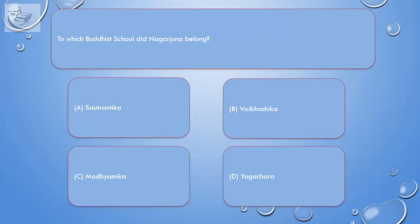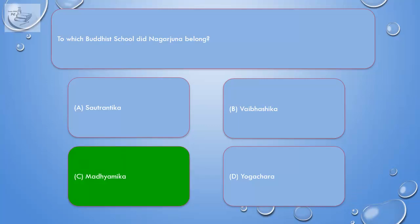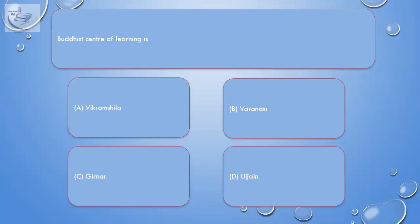Question. To which Buddhist school did Nagarjuna belong? A. Sautrantika. B. Vaibhashika. C. Madhyamika. D. Yogachara. Correct answer is C. Madhyamika.